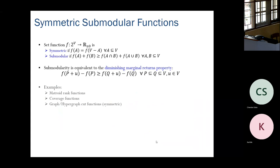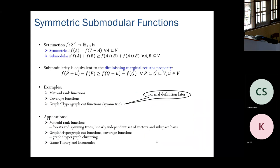Well-known examples of submodular functions include matroid rank functions, coverage functions, and hypergraph cut functions. Matroid rank functions and coverage functions are not symmetric, but hypergraph cut functions are symmetric. Submodular functions arise in several areas of combinatorial optimization and, owing to the diminishing marginal returns property, are also used to model valuation functions of agents in game theory and economics.